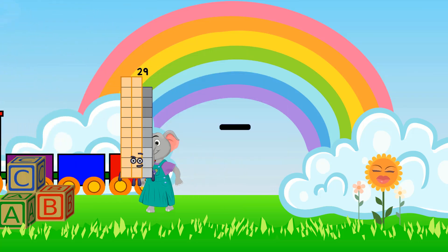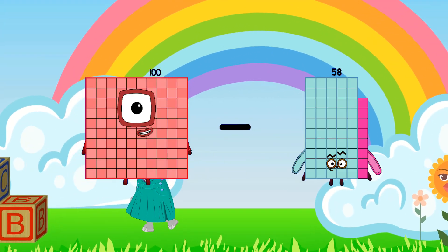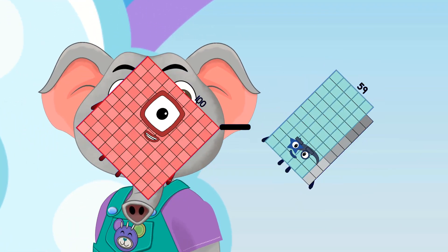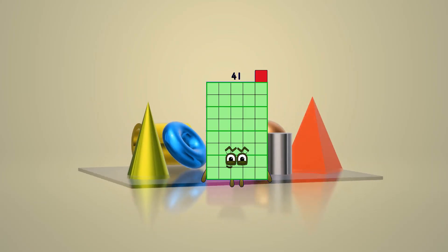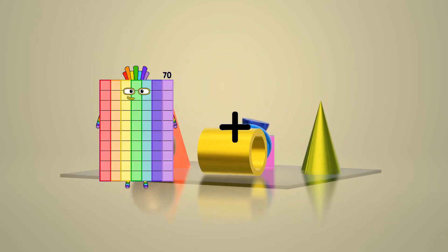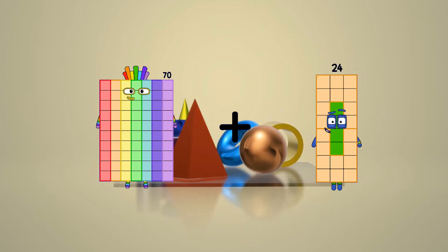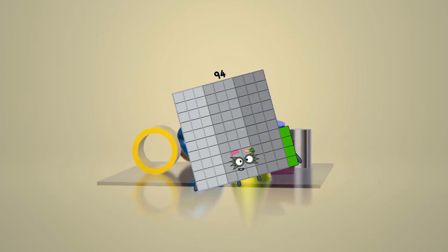100 minus 59 equals 41. 70 plus 24 equals 94.